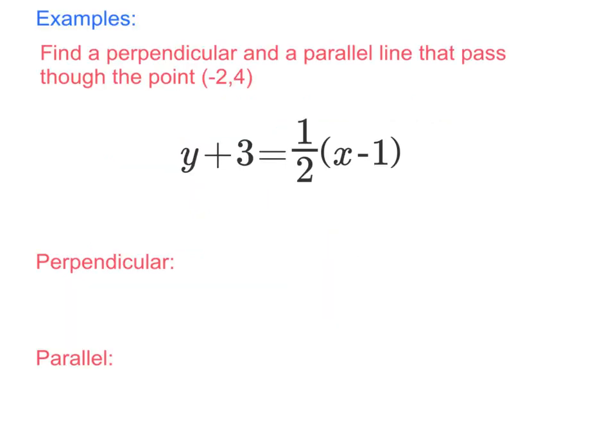Now let's look at this example together. Here we have a given equation, and the question asks us to find a perpendicular and a parallel line that passes through this point right here.